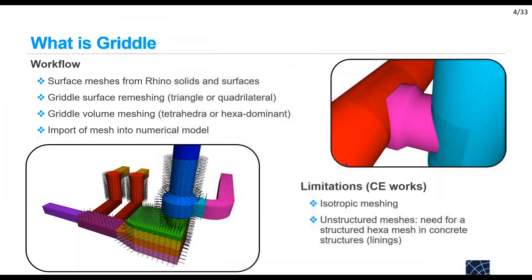And here I have my model. Despite the advantages of Griddle, there are still some limitations, particularly for civil engineering works. One limitation is that Griddle is an isotropic mesher, meaning that when you specify the size of elements you will have the same size in all directions. For example, if you create the lining of a tunnel using Griddle and specify a given number of elements across the thickness, you will also obtain the same size in the hoop direction and the axial direction.